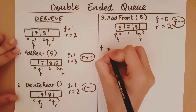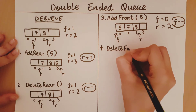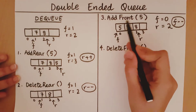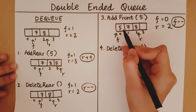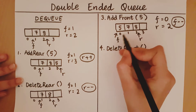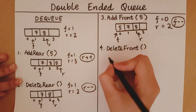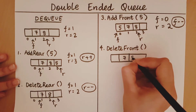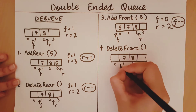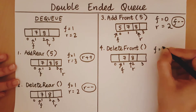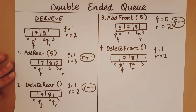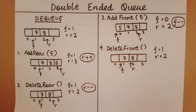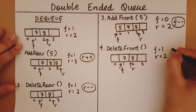Let's look at the fourth operation: delete from the front. When we delete from the front, we want to delete element 5 at index 0. To do that, we move the front to index 1. I increment front by 1 so that the queue no longer keeps track of the 0th element. The operation performed here is front++.